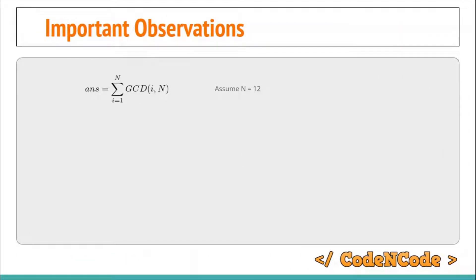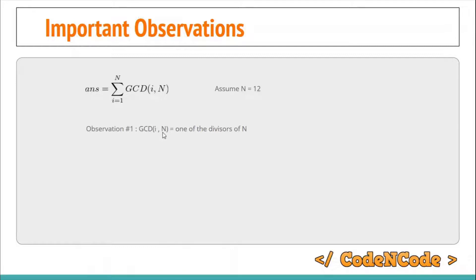Let's look at some important observations, taking n = 12 as an example. The first observation is that GCD(i, n) for i from 1 to n is always equal to one of the divisors of n. This makes sense because GCD divides both i and n, so it must be a divisor of n. Importantly, we can find all divisors of n in O(sqrt(N)) time — this is why each query can be evaluated in sqrt(N) time.